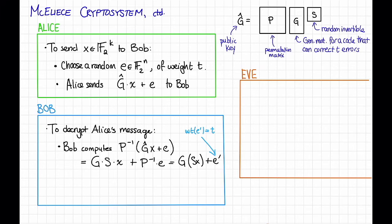So Bob can decode his code to obtain S times X. And now Bob has S. It's part of his private key. So he can invert it and recover X. And now Bob has X. Hooray!